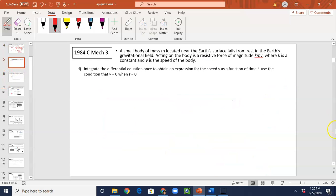Now take a look at the next part. Same question. Now we have to integrate a differential equation once to obtain an expression for the speed V as a function of time. Use the condition that V equals to zero when T equals to zero.